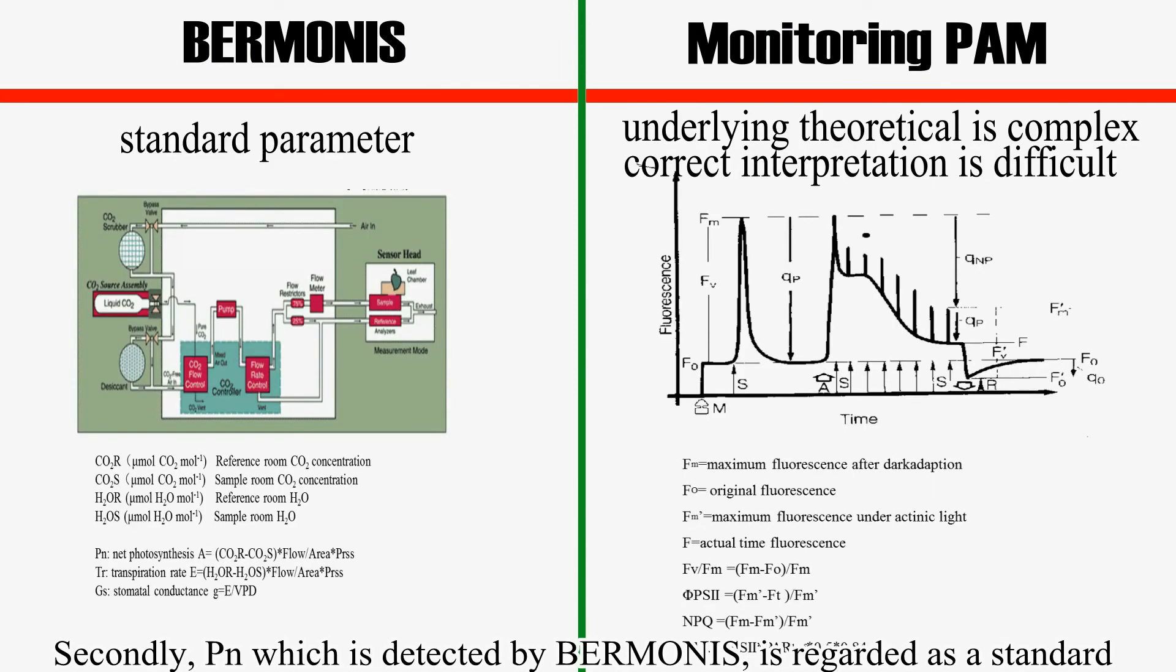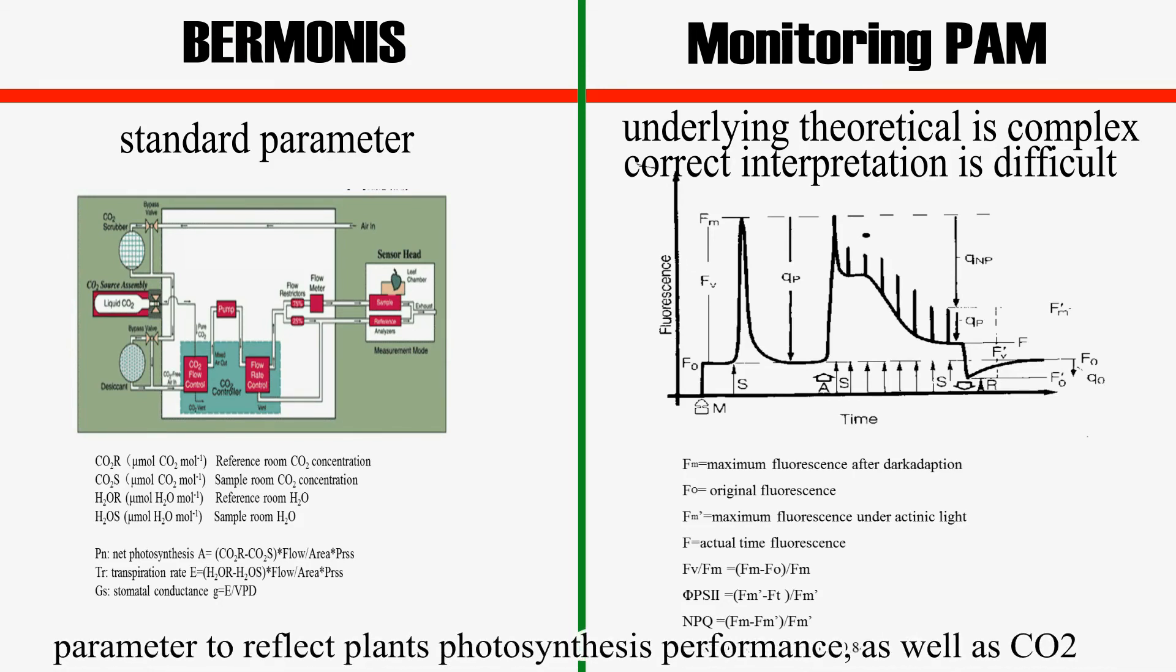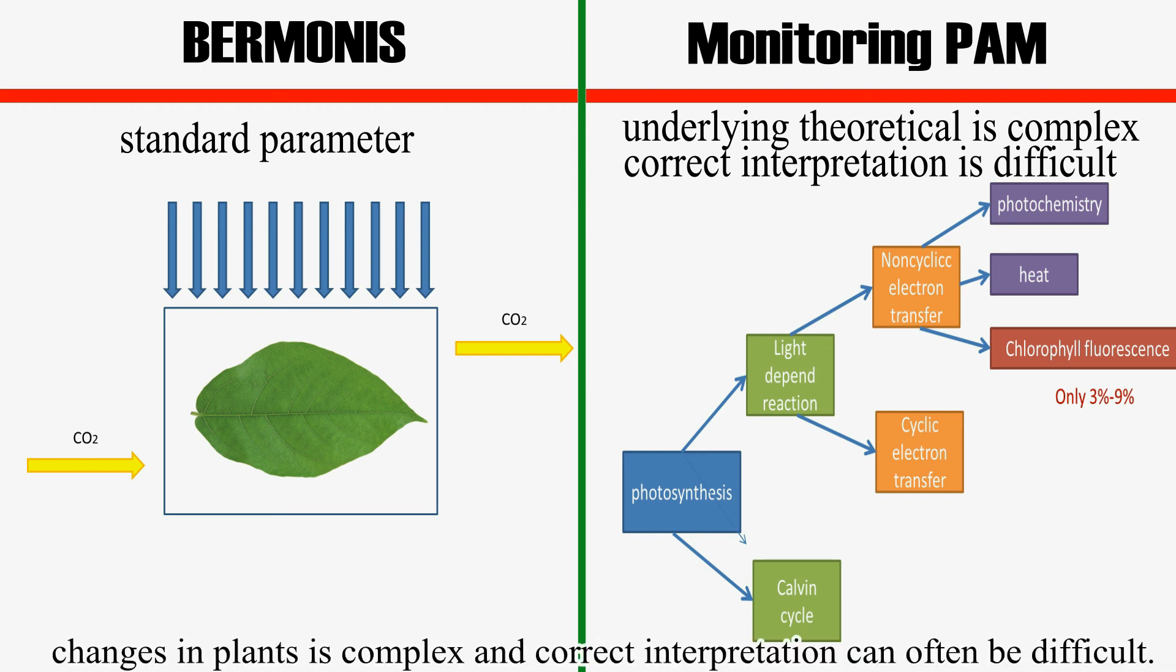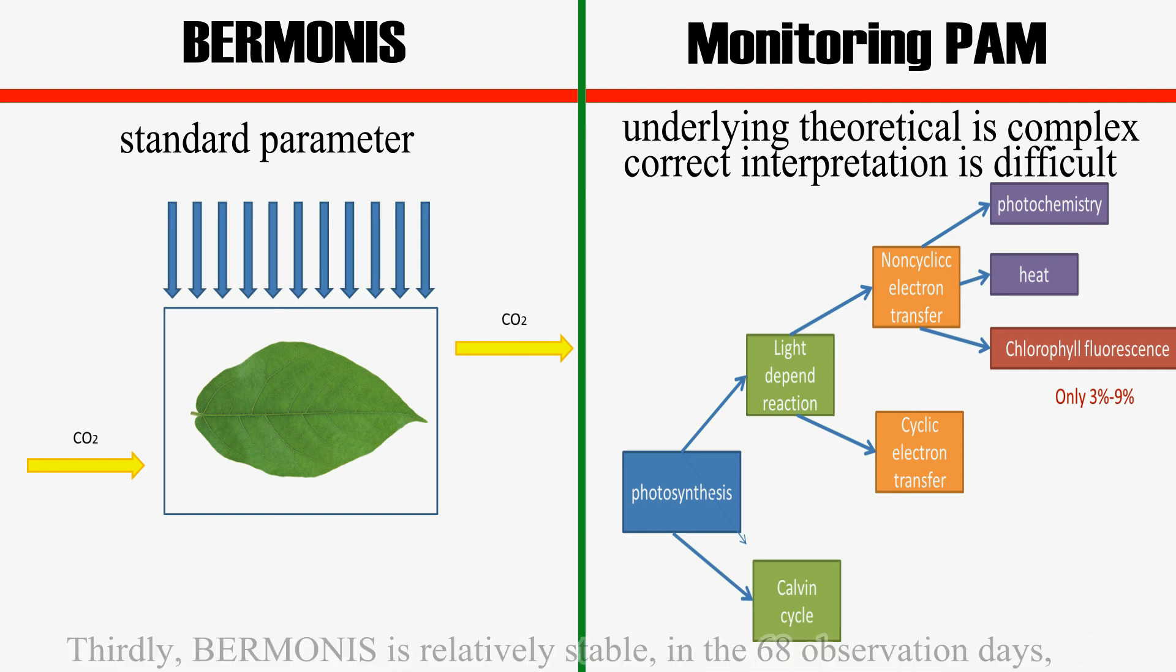Secondly, net photosynthesis which is detected by BERMONIS is regarded as a standard parameter to reflect plant photosynthesis performance as well as CO2 assimilation. However, the underlying theoretical basis of fluorescence parameters and changes in plants is complex and lucrative interpretation can often be difficult.